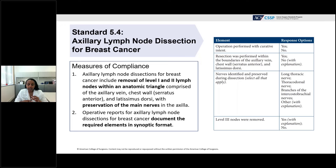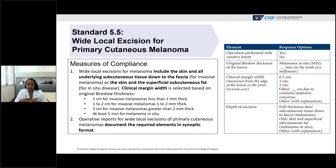Standard 5.4, axillary lymph node dissection for breast cancer, requires removing level one and two lymph nodes within the anatomic triangle of the axillary vein, chest wall or serratus anterior, and latissimus dorsi muscle, while preserving the main nerves in the axilla. This must be recorded in synoptic format. Standard 5.5, wide local excision for primary cutaneous melanoma, requires excision including skin and all underlying subcutaneous tissue down to fascia for invasive melanoma, or just to subcutaneous fat for in situ disease, with clinical margin width based on Breslow thickness.